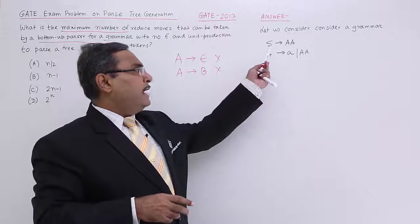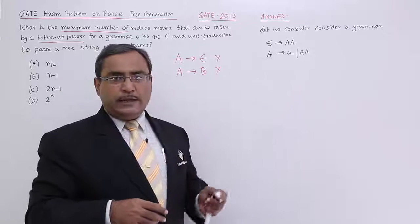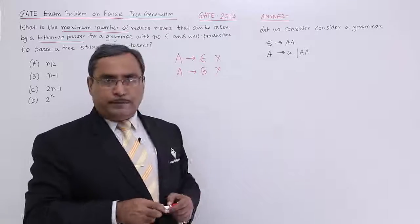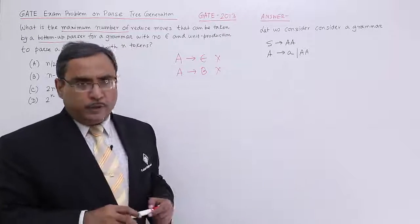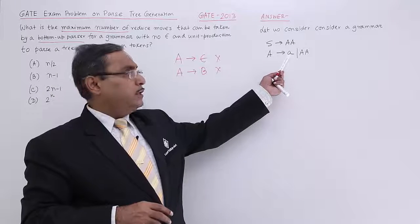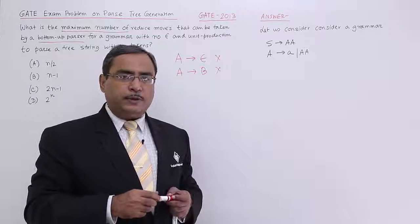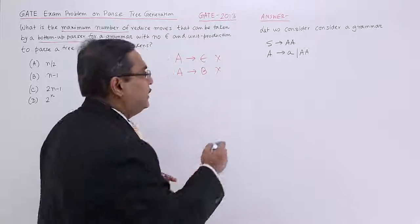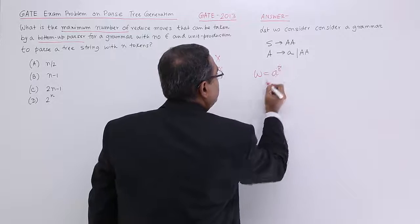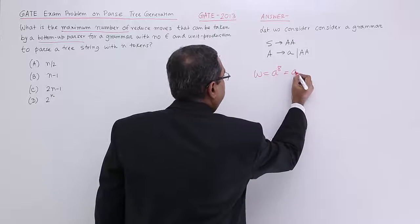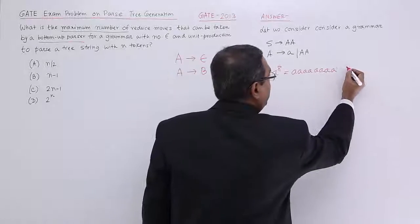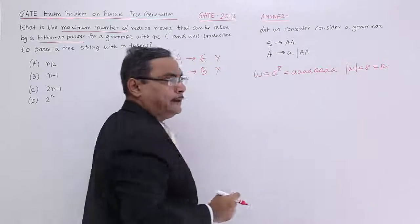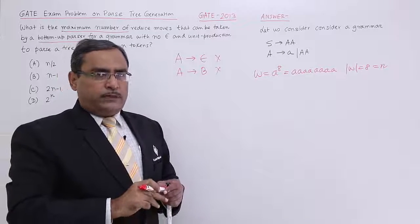Since I cannot write S produces A (that would be a unit production), I write S produces A A. A produces lowercase a is allowed because it is not a unit production, and A produces A A. Now let us consider the string W equal to a to the power of 8, meaning 'a' appears 8 times. So the length of W is n equals 8 tokens.